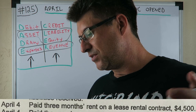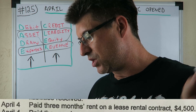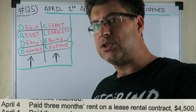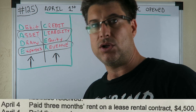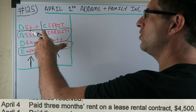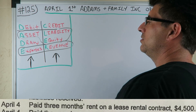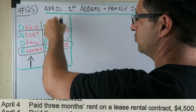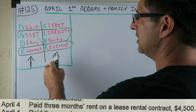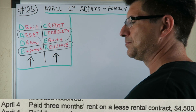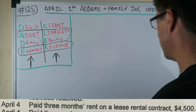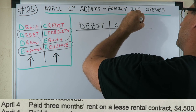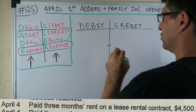Paid three months rent on a lease rental contract, $4,500. Out of these 27 journal entries, 18 of them have cash in them. Remember DC ADE LER: asset, draw, expense going up — you debit them; going down — you credit them. Liability, equity, and revenue increasing — you credit them; decreasing — you debit them. And debits always have to equal credits in a journal entry.